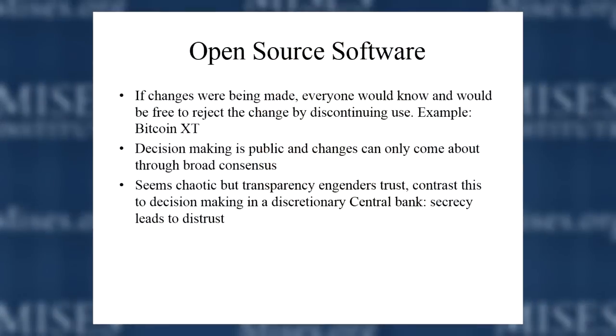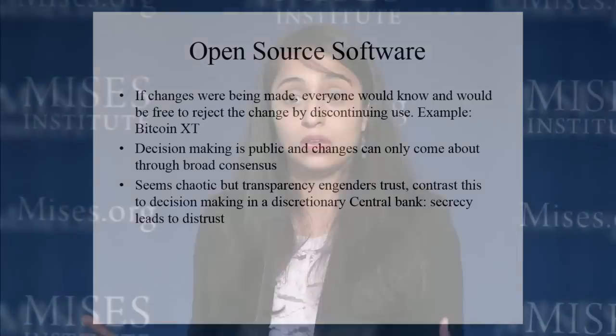Contrast this open public consensus decision-making with decisions made behind closed doors in a central bank given discretion — not bound by a rule. When there's secrecy and people don't know how decisions are made, that leads to distrust. Most people's opinion of the Fed is: 'I don't understand them, but they have a lot of power.' Decision-making with discretion leads to distrust — which is why there's so much push among economists for constraining central banks with a public, transparent rule so everybody can know the process.